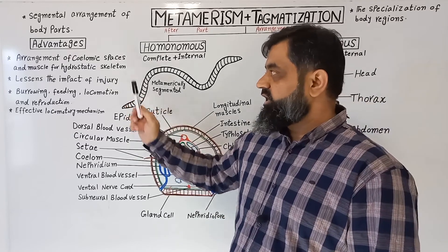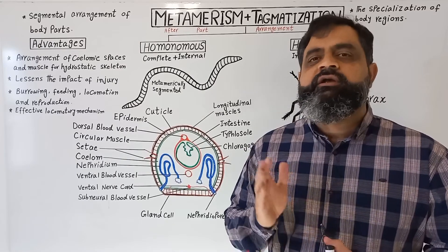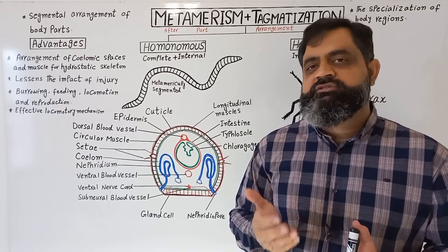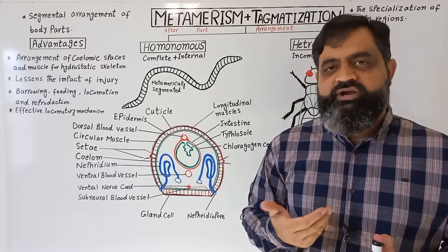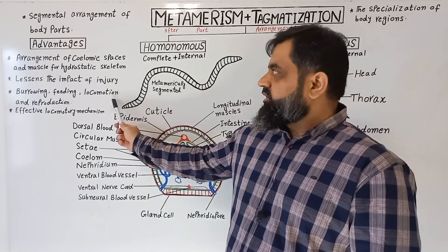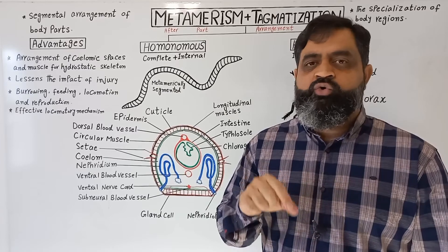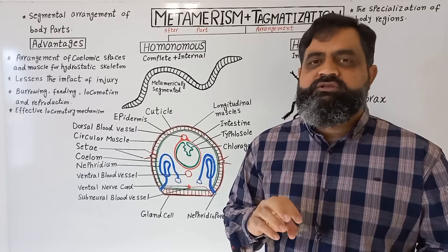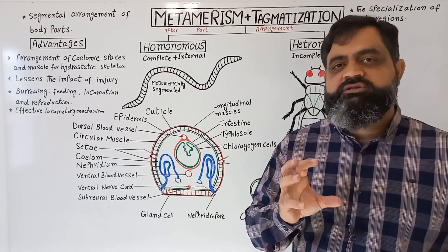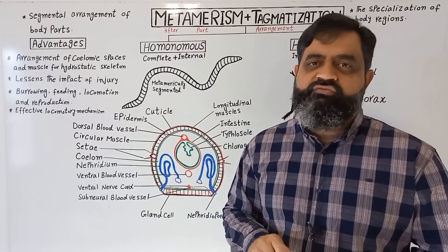The second advantage of metamerism is that it lessens the impact of injury. If some segments of the body have been injured, destroyed, or eaten by a predator, the rest of the segments can still work and perform body functions at a regular rate, and sometimes they can regenerate their body parts. So that is very advantageous — if they lose some segments they can still survive. The next advantage is that metamerism helps in burrowing activity. The earthworm can eat soil and make a hole inside it using its setae, muscles, and the hydrostatic pressure of the coelomic fluid to burrow inside the soil. Metamerism is also very helpful for feeding, locomotion, and reproduction.